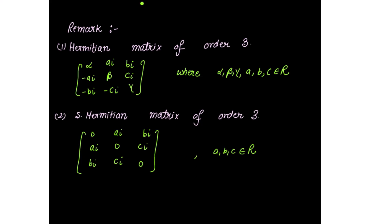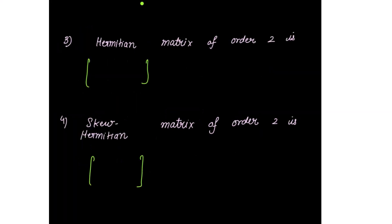For a Hermitian matrix of order 2, writing a and c in the diagonal — you can use any variable — and then iota*b and negative iota*b. So this is a Hermitian matrix of order 2.